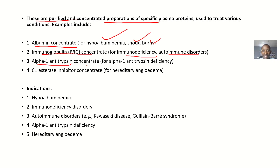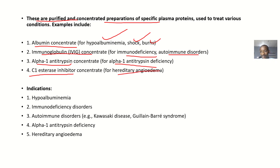Then there is alpha-1-antitrypsin concentrate — that's used if the patient has an alpha-1-antitrypsin deficiency. There is also C1-esterase inhibitor concentrate, which is for hereditary angioedema. Those are the indications — basically the situations where you need it.